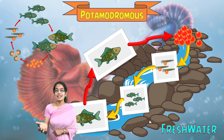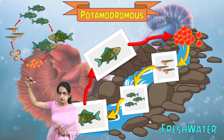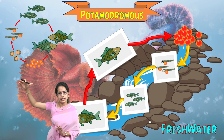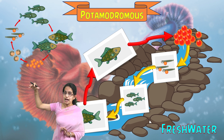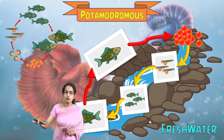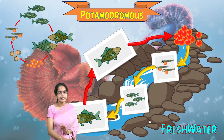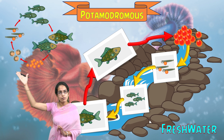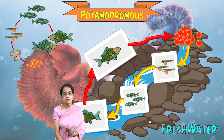Upstream is the region where the river originates, at a higher elevation compared to downstream. When eggs are laid at a higher elevation, they move with the flowing water downstream, where the fish turn into adults. Once adult, they migrate back upstream to lay eggs again. This is the Potimidromus life cycle.